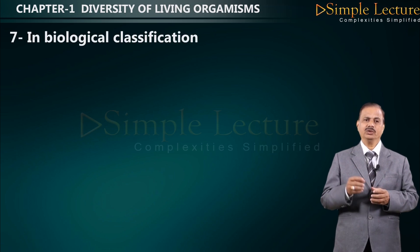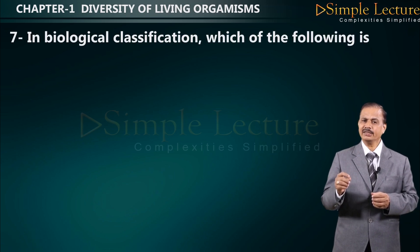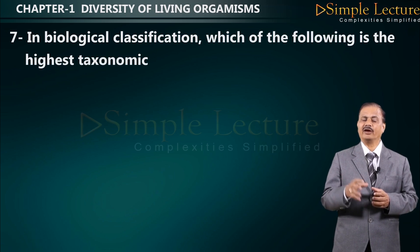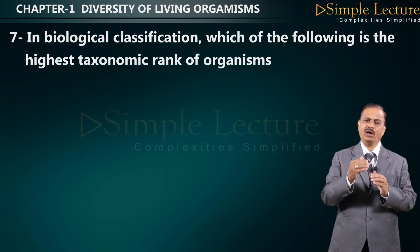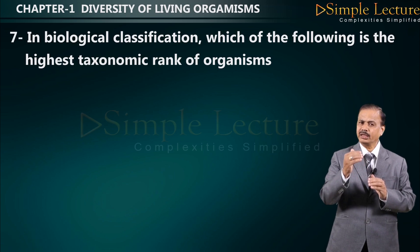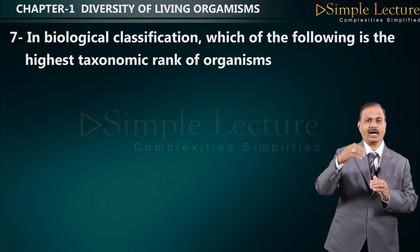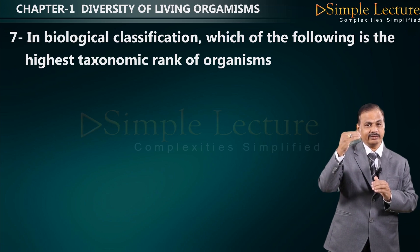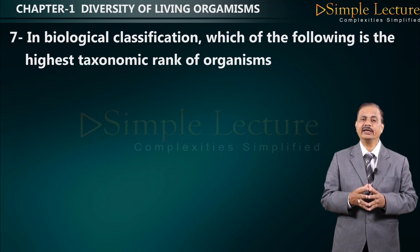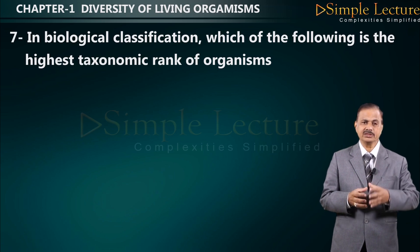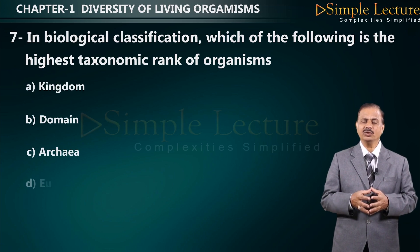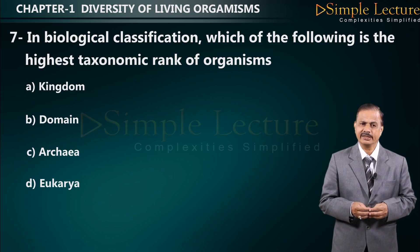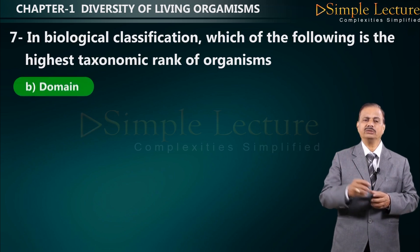Question number seven: in biological classification, which is the highest taxonomic rank? Starting from species, genus, family, order, going higher in the Linnaean hierarchy — options are A: kingdom, B: domain, C: Archaea, D: Eukarya. The correct answer is B: domain, which is the eighth and highest level in the Linnaean hierarchy.